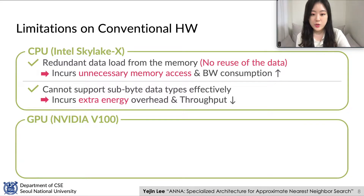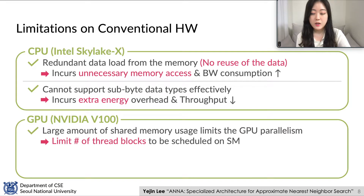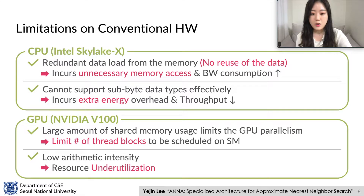For GPUs, we observed that compression-based algorithms require a relatively large amount of shared memory per block, and this requirement limits the number of thread blocks scheduled on an SM, thus reducing the parallelism degree of the GPU. Also, the low arithmetic intensity nature of compression-based algorithms results in underutilization of GPU resources.